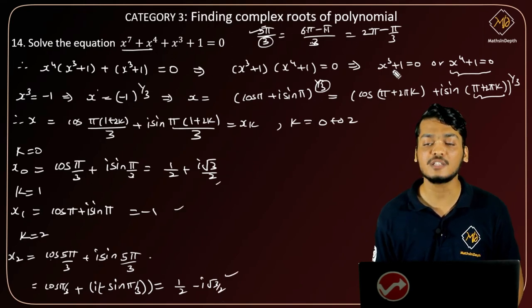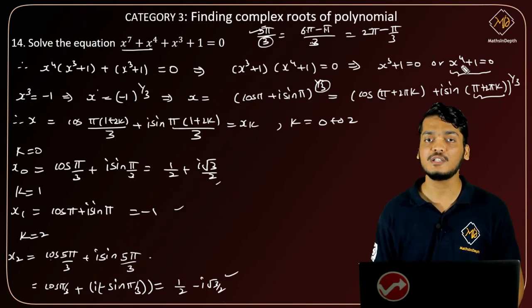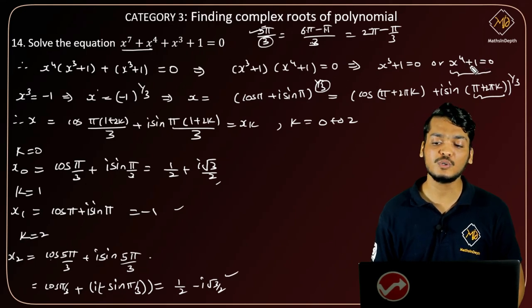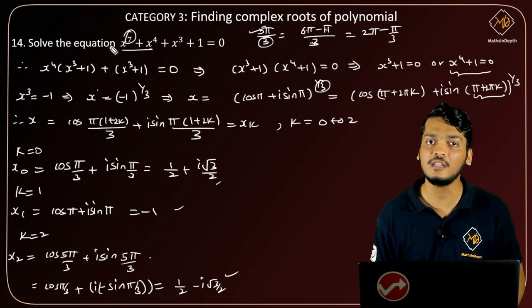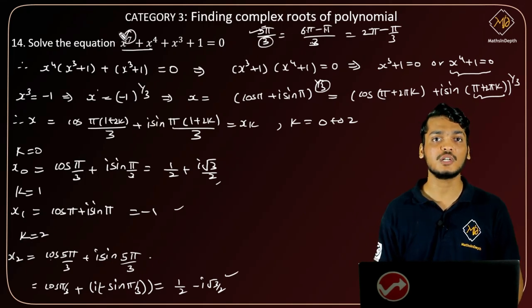These are the 3 roots from the equation x cube equals to minus 1. And the solutions for x raise to 4 equals to minus 1 you can see from question number 13. So total how many roots did we get? 7. And in this polynomial, what is the highest degree? 7. Let's see question number 15.